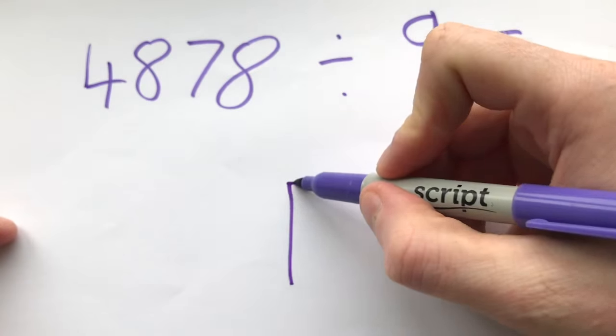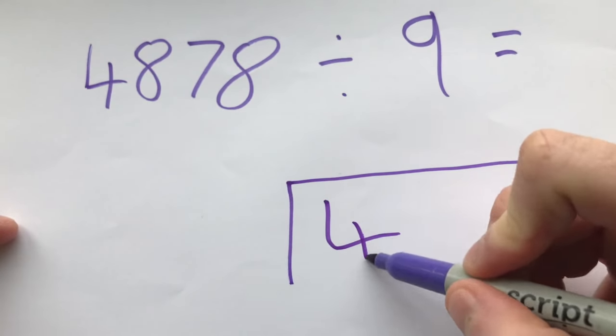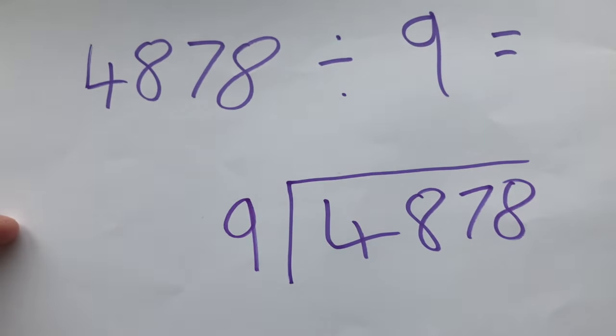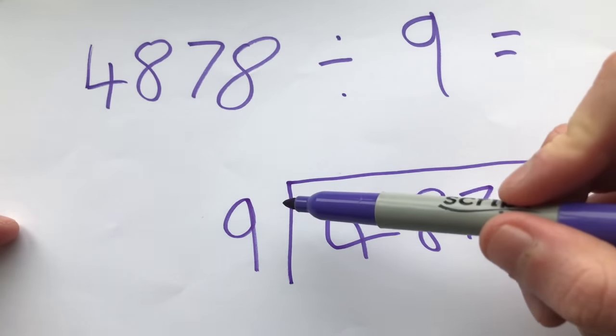Another example, we draw a bus stop method. Four, eight, seven, eight. And we're dividing by nine. So again, we follow the step. How many nines going to four? Well, they don't. So we'll move across.